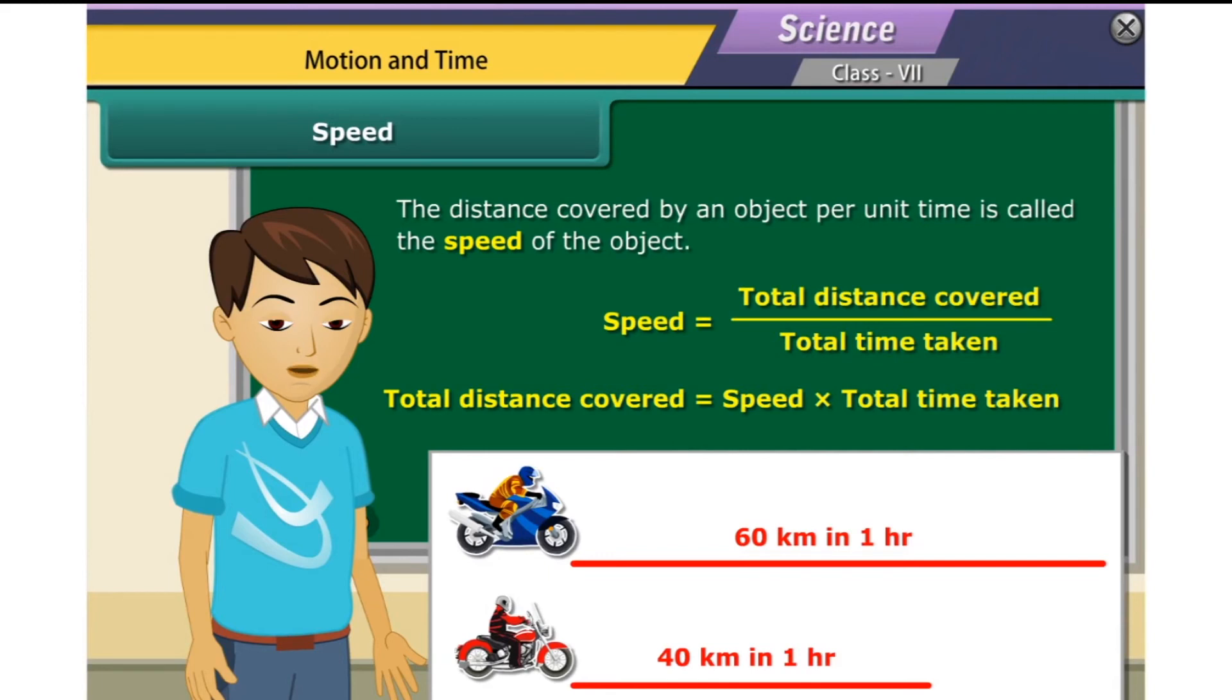The speed of your brother's bike is 60 km per hour and that of his friend's bike is 40 km per hour. Your brother's bike is certainly faster than his friend's because its speed is greater.